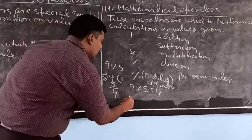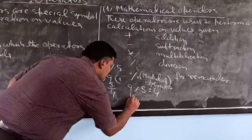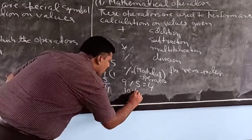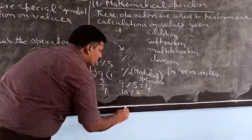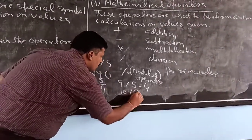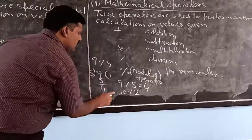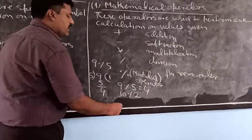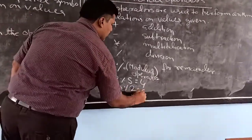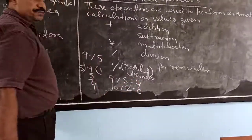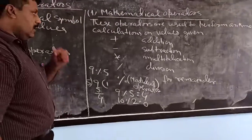Suppose I write 10 modulus 2. If you divide 10 by 2, the remainder is 0.